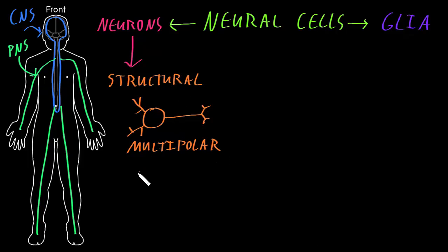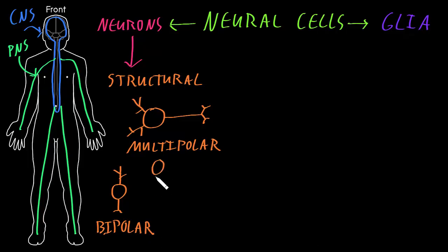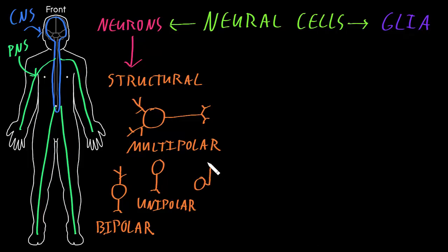Less common structural types of neurons include neurons that have a soma, only one dendrite, and one axon — these are called bipolar neurons. Neurons that have a soma and only one process, which is an axon, are called unipolar neurons. And then neurons that have a soma and a single short process coming out of the soma that then splits into two long axons — this one is called a pseudo-unipolar neuron.